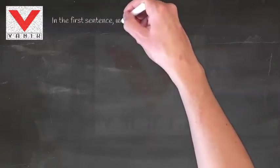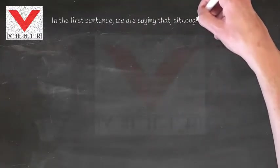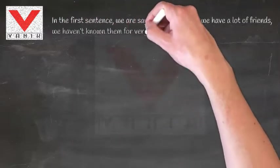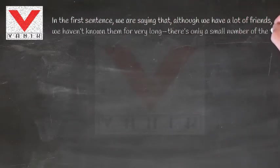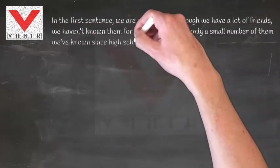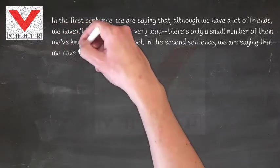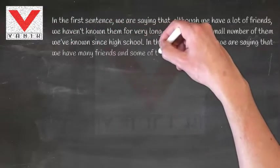In the first sentence, we are saying that although we have a lot of friends, we haven't known them for very long. There's only a small number of them we've known since high school. In the second sentence, we are saying that we have many friends and some of them are really old friends we've known since high school.